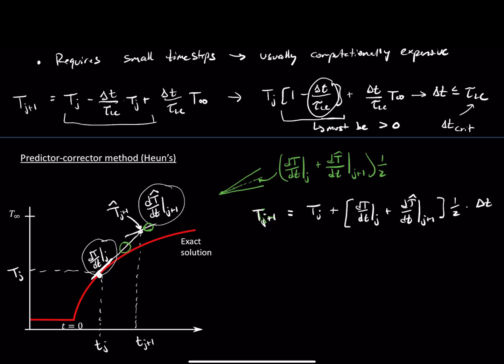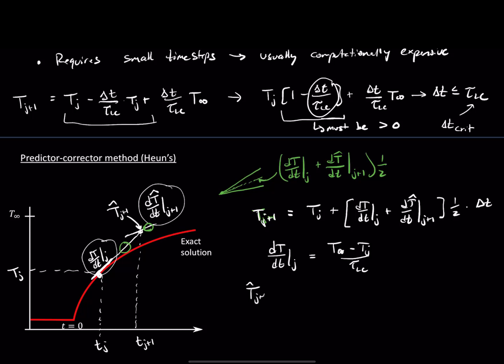In every case we're still evaluating the state equation — that's our derivative dt/dt at j — using the state equation: (T∞ - Tj) / τ_lc. But for the estimate of the second derivative, the one at the next time step, we need to predict the temperature we're going to get. So T-hat at j+1 is equal to Tj plus the derivative dt/dt at j times delta t. This is our guess or estimate of the next temperature.